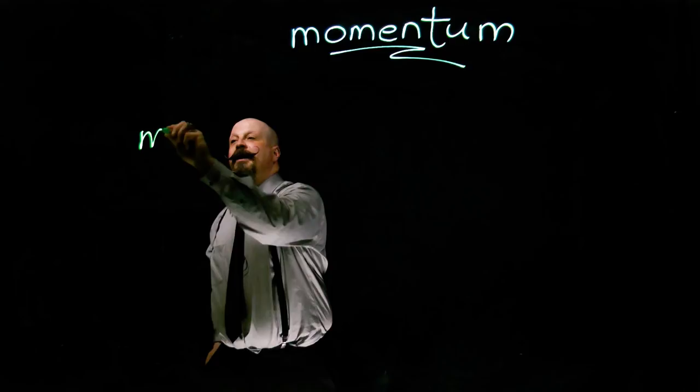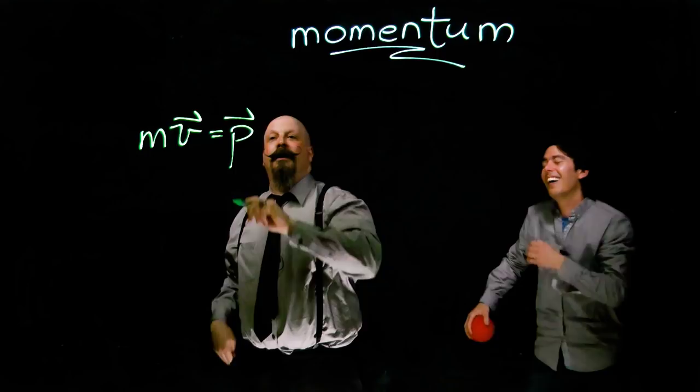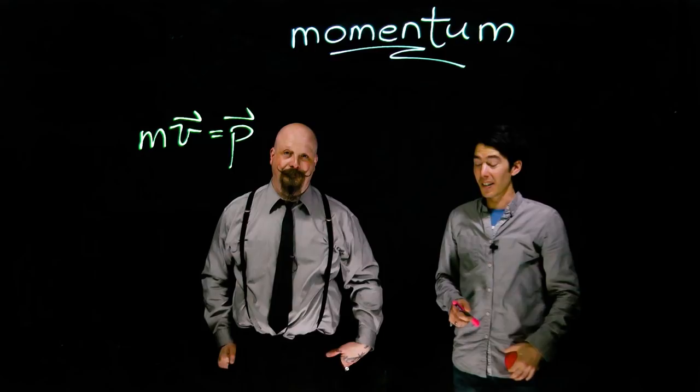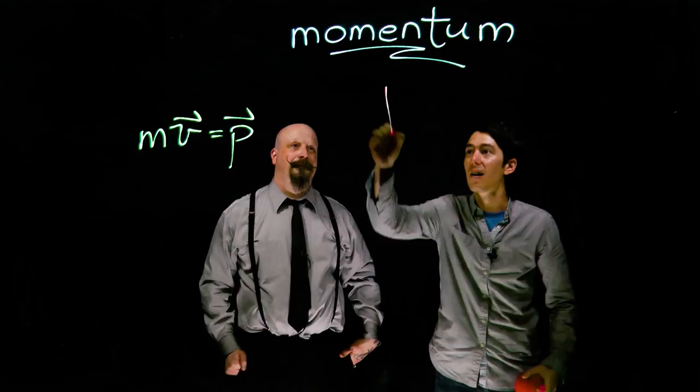The momentum of an object is its mass multiplied by the velocity vector. We give that a new value of momentum. Momentum is a vector, and it's very important to keep that in mind. We're going to be looking at a couple of examples in one-dimension and two-dimensional motion. Like Orbax said, the direction is important.